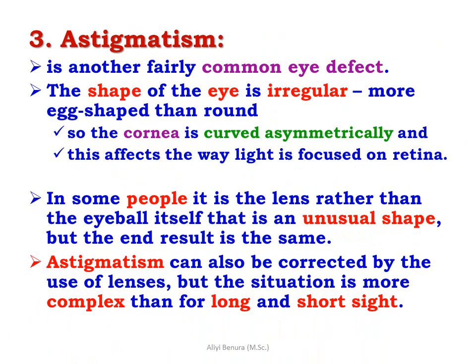Astigmatism is another fairly common eye defect. The shape of the eye is irregular — more egg-shaped than round — so the cornea is curved asymmetrically. This affects the way light is focused on the retina. In some people, it is the lens rather than the eyeball itself that is an unusual shape, but the result is the same. Astigmatism can also be corrected using a lens, but the situation is more complex than for long- and short-sightedness.